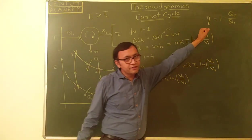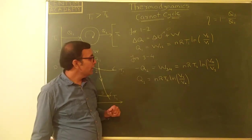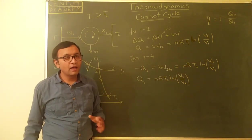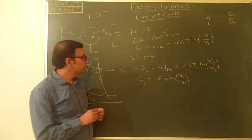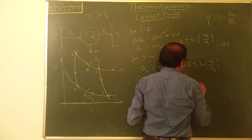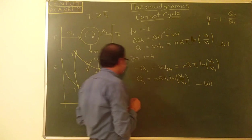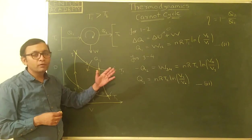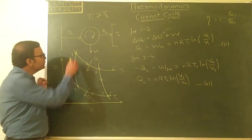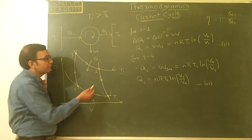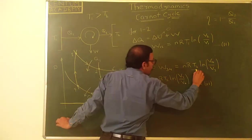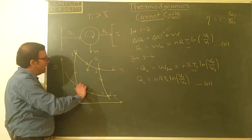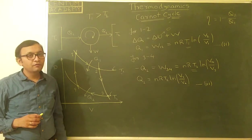When we substitute into efficiency = 1 − Q2/Q1, a term ln(V2/V1) / ln(V3/V4) will appear, but the volumes at those points are not known. We have used the isothermal nature of processes 1→2 and 3→4, but we have not yet used the fact that 2→3 and 4→1 are adiabatic. Let us use those facts to find a relation between the volumes.